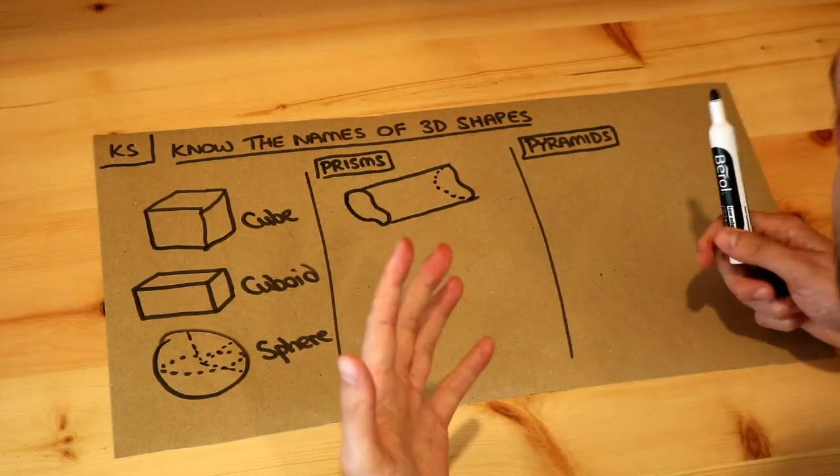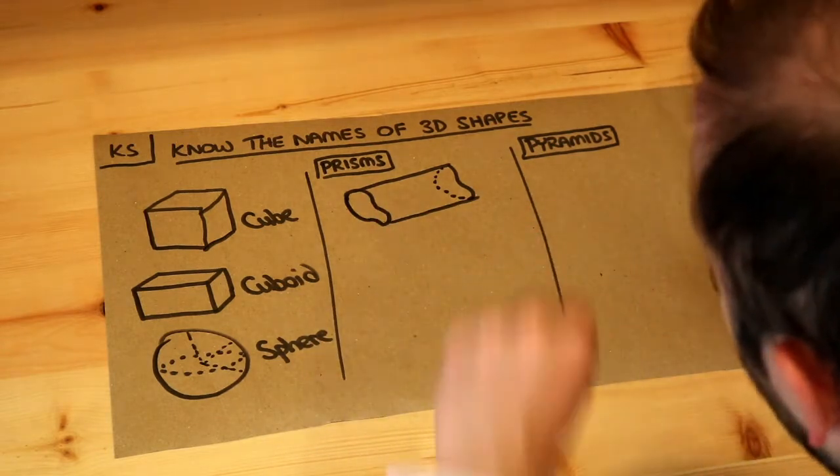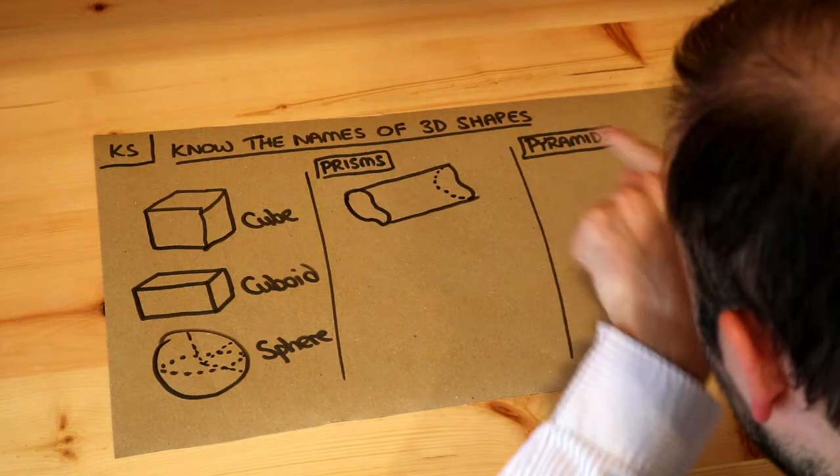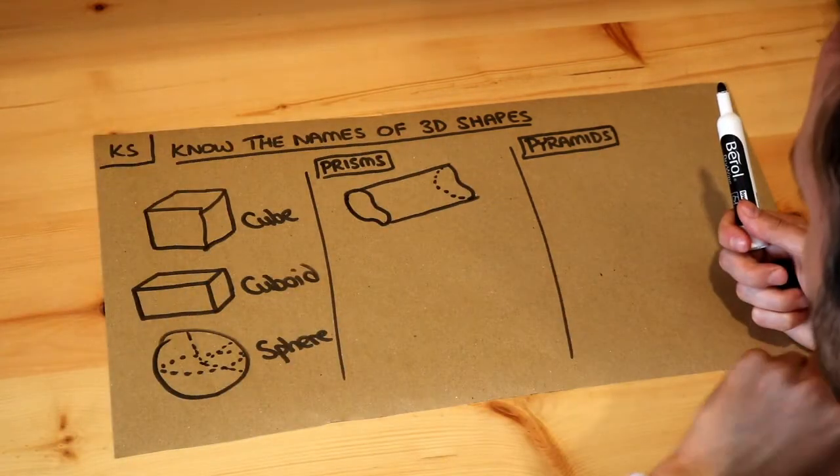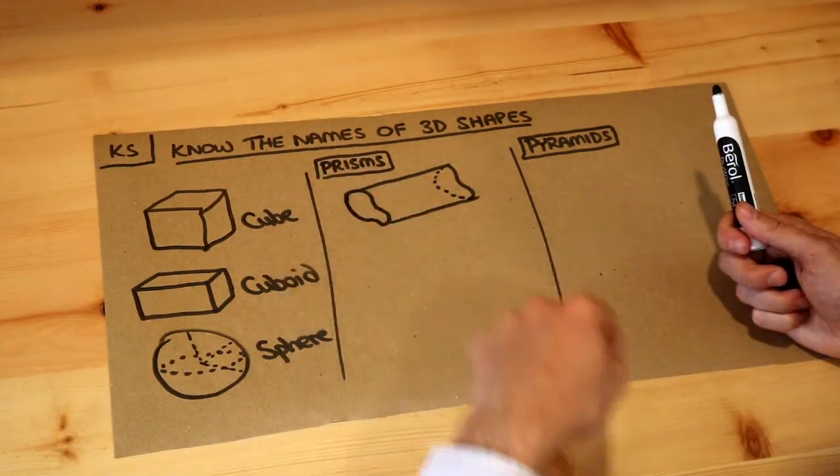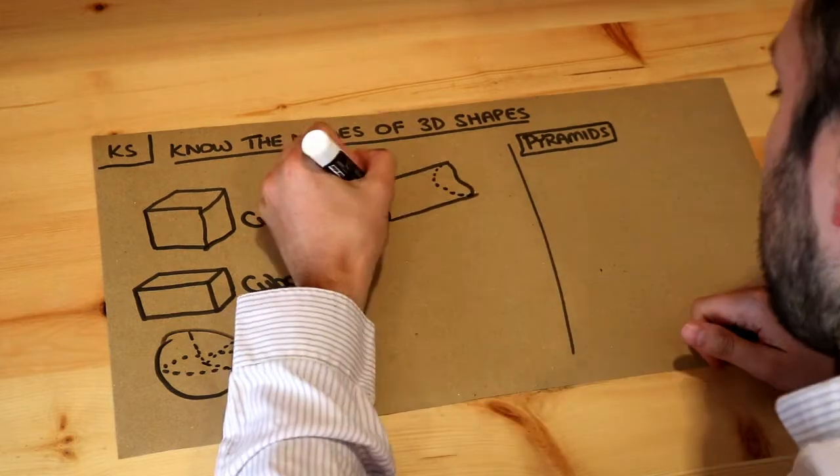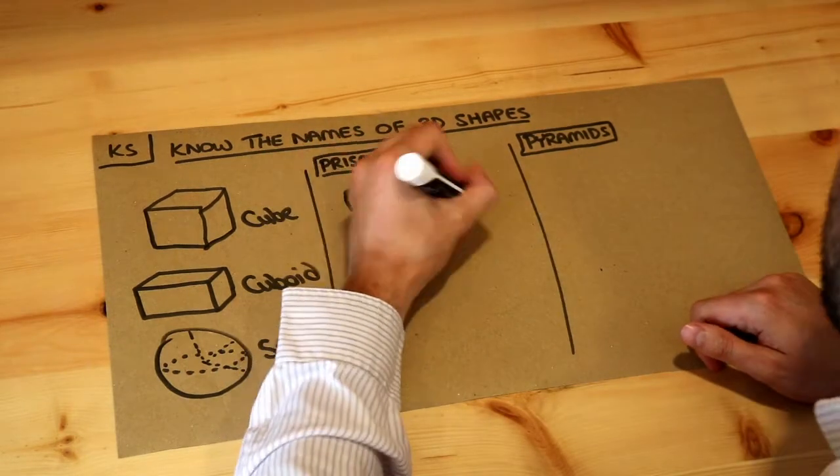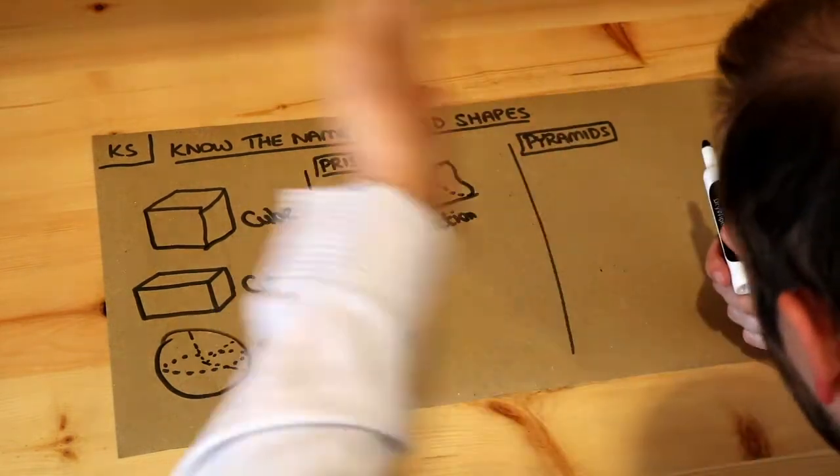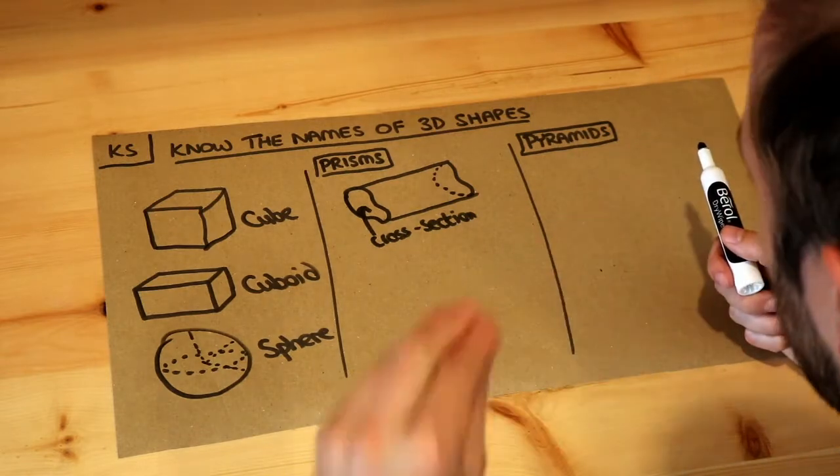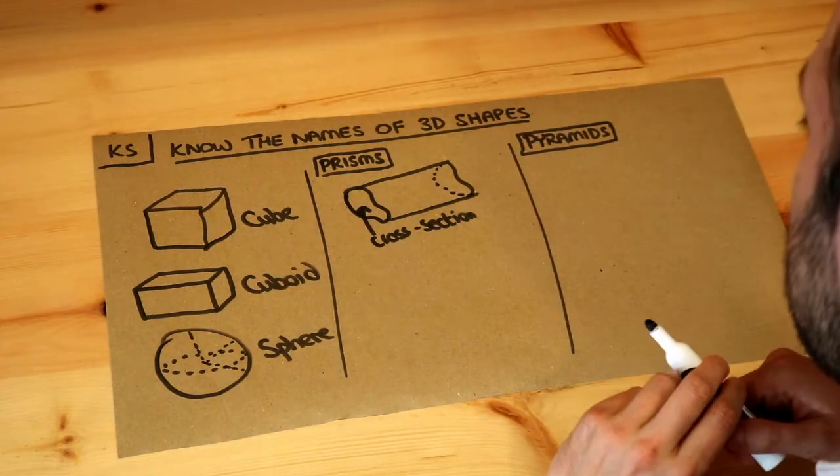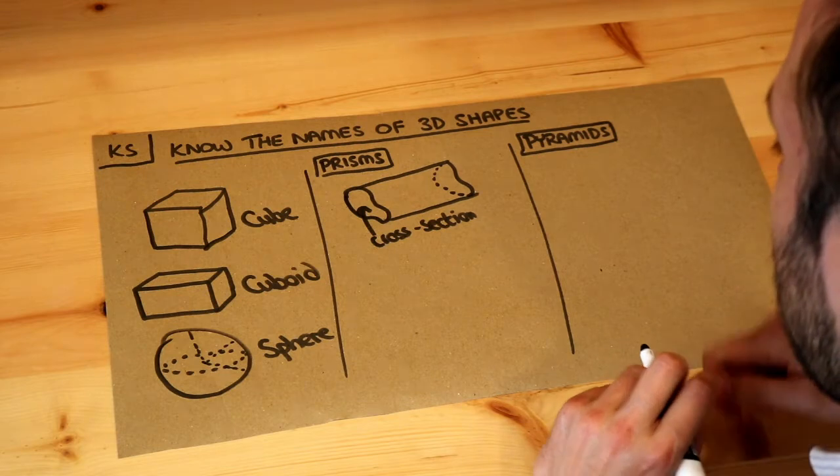It's a bit like if you've ever seen Play-Doh for example, and you know with Play-Doh you can force the Play-Doh through a little shape and it comes out as a tube. That tube would be a prism and the cross-section, this is known as a cross-section, the cross-section of your little tube would be the same as the shape you forced that Play-Doh through. So let's see some examples of prisms.